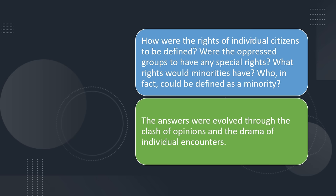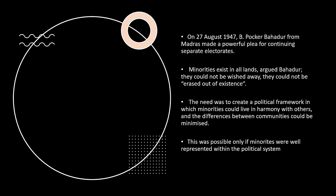Now the question arose: how do you define individual rights, special rights, and minority rights? On 27th August 1947, B. Poker from Madras made a plea for a separate electorate for minorities.